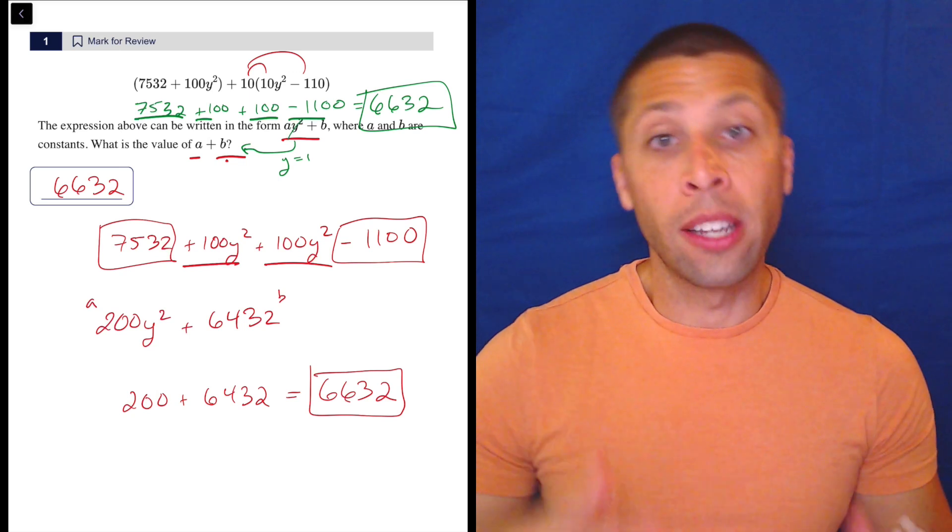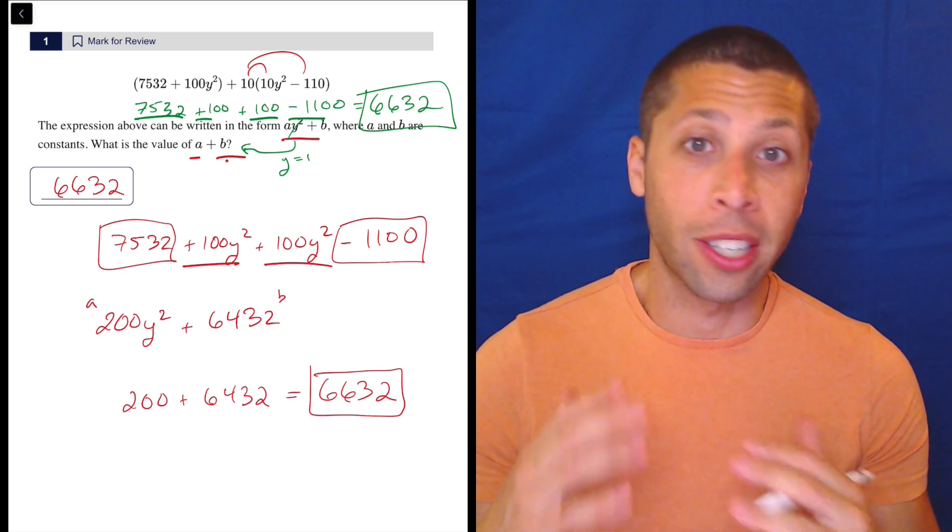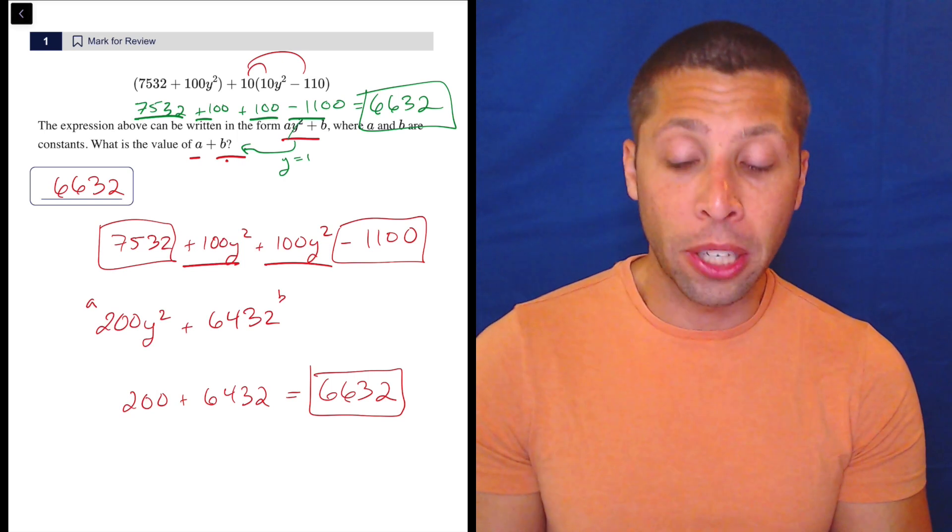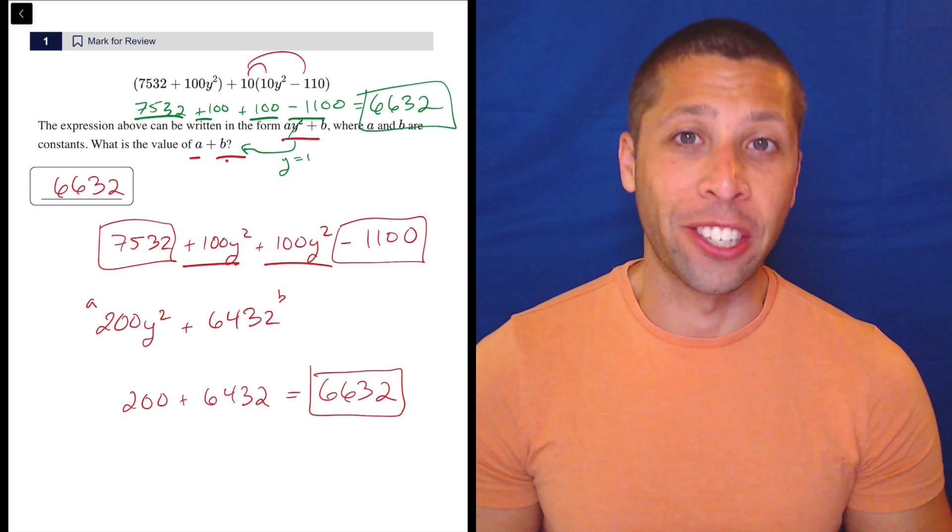So what do you think? Is this one where you would have even seen that arithmetize opportunity or is this just like me? You're kind of diving right into the traditional algebra here and just getting all the coefficients. I'm curious what you think is most efficient.